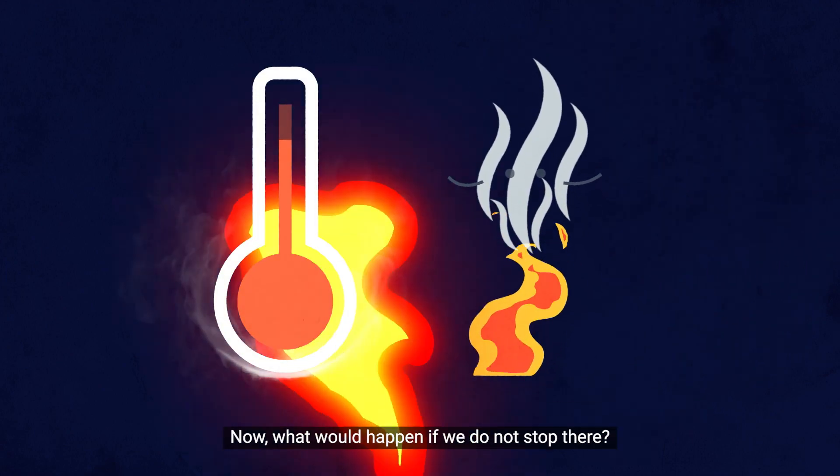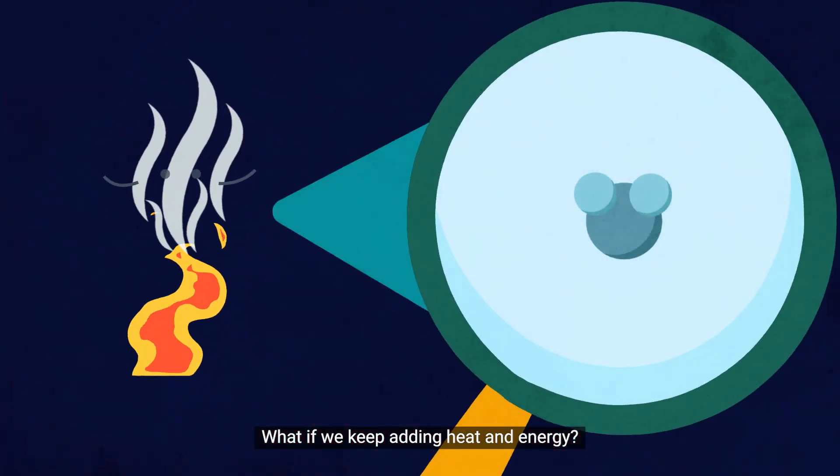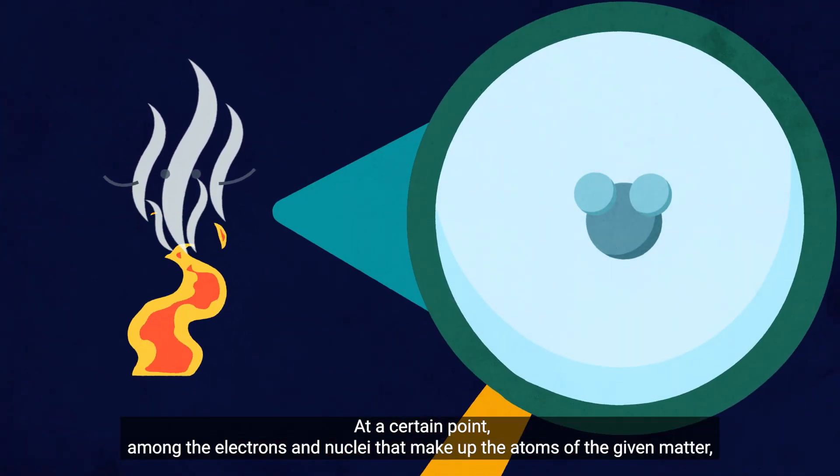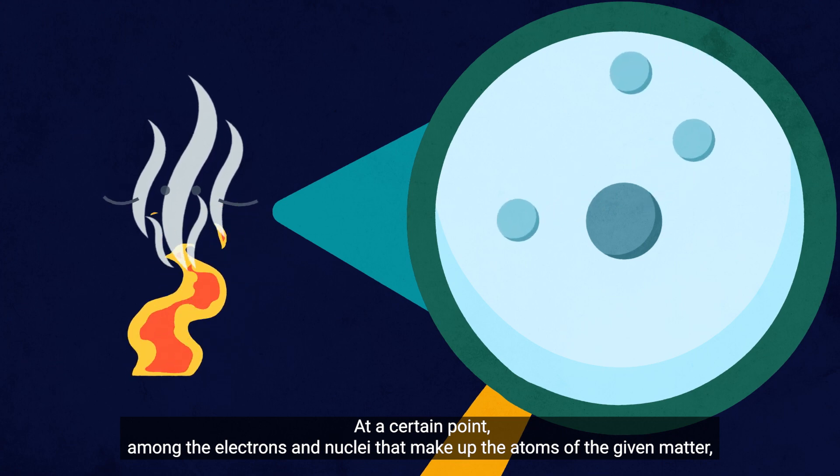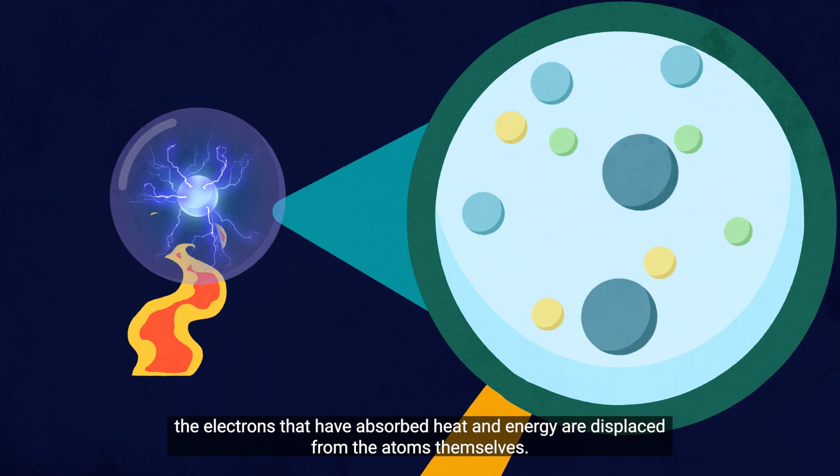Now, what would happen if we do not stop there? What if we keep adding heat and energy? At a certain point, among the electrons and nuclei that make up the atoms of the given matter, the electrons that have absorbed heat and energy are displaced from the atoms themselves.